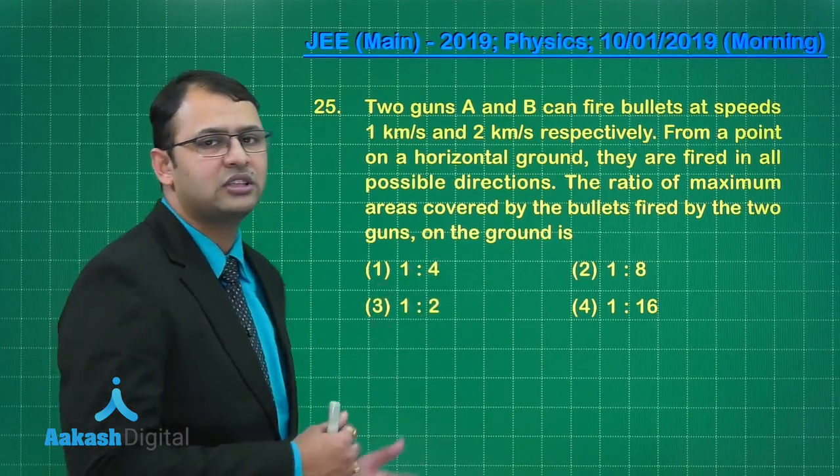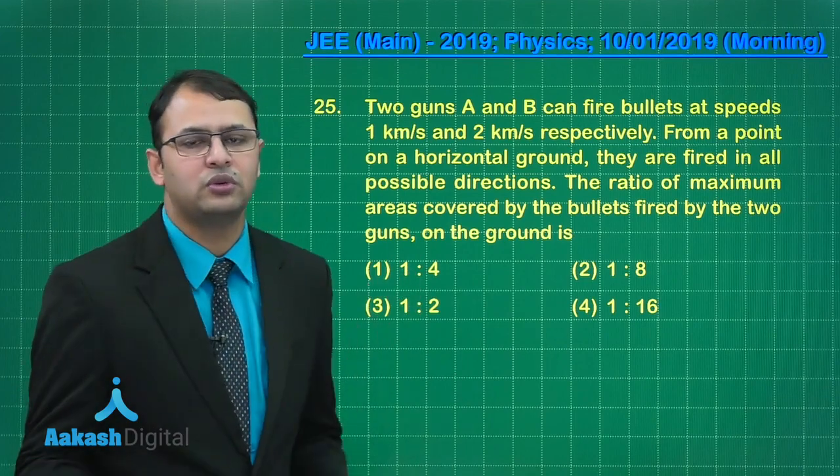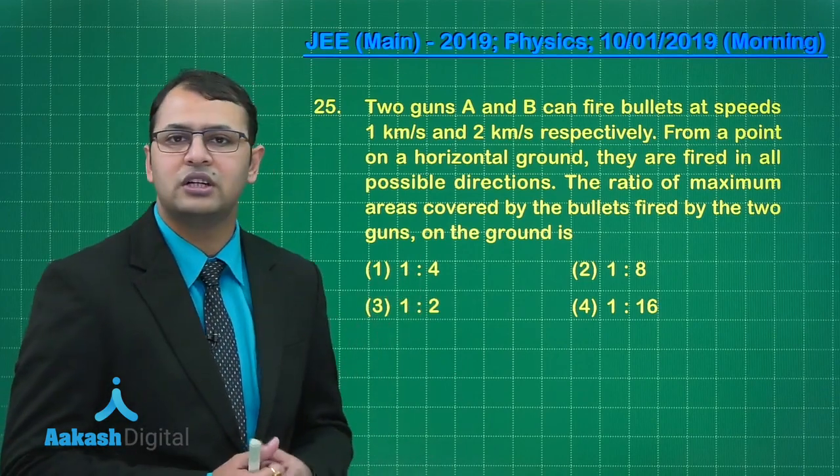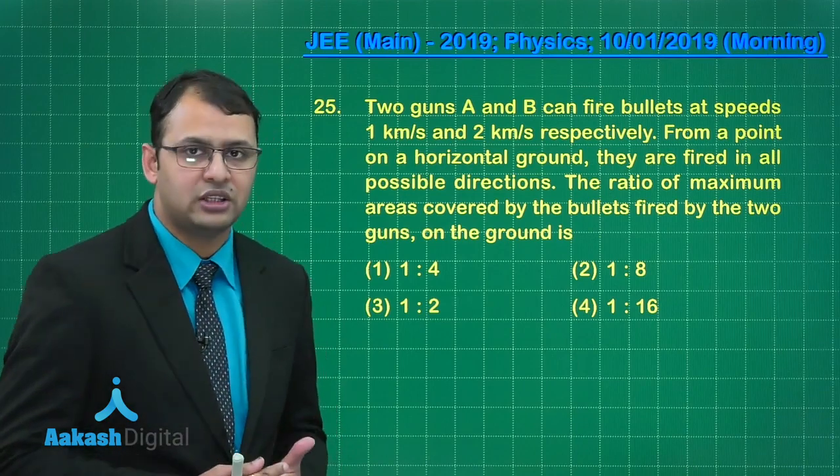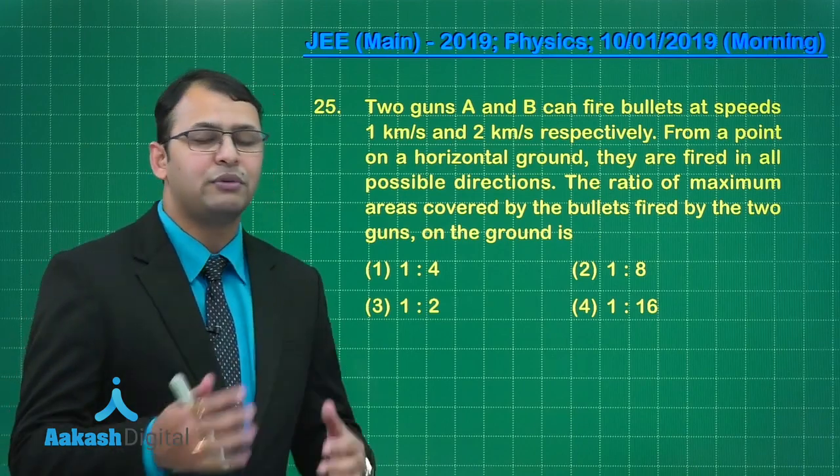This can be considered as a projectile where the bullets are being thrown or projected at an angle theta with the horizontal. What would be the condition for maximum range or maximum radius? That would be 45 degrees.